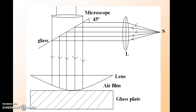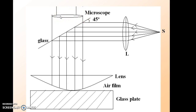Here is the experimental arrangement for obtaining Newton's rings in the laboratory, where S is the source of monochromatic light and L is the focusing lens. There is a glass plate inclined at an angle of 45 degrees with the vertical so that incidence of rays is made normal onto the wedge-shaped air film formed between the lens and glass plate. The rays after reflection retrace their path, which can be observed with the help of a microscope.